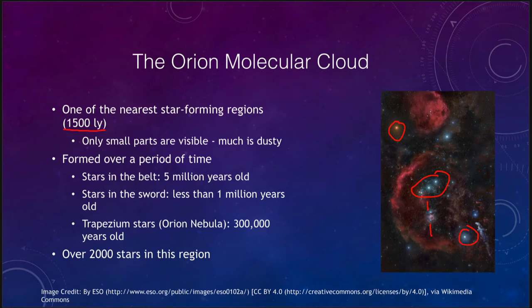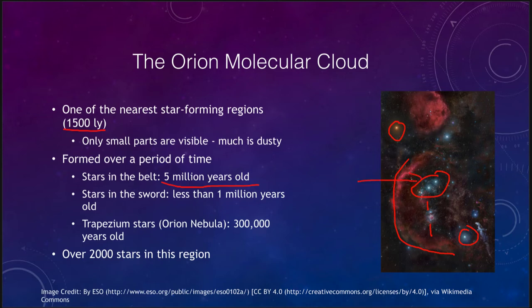Only some parts of this are visible. We can see some of the areas, the great loop coming around Orion and some of the other nebulae, which are emission nebulae caused by the emission of hydrogen gas giving off a very bright glow. But it's hard to see into this area because it is so dusty. The stars in the belt are about 5 million years old.